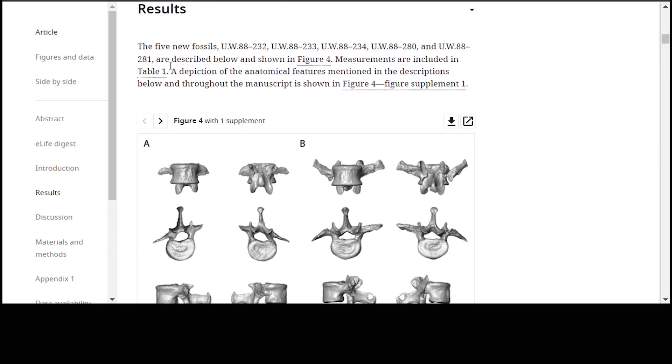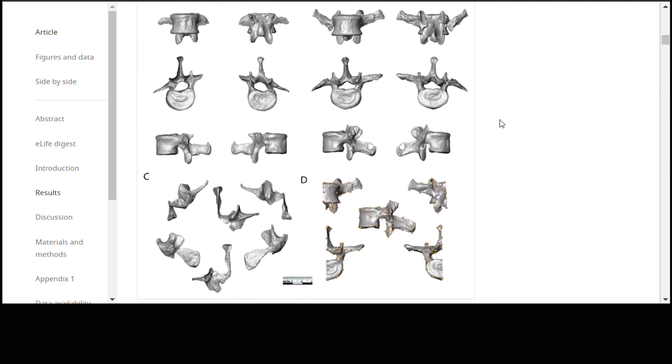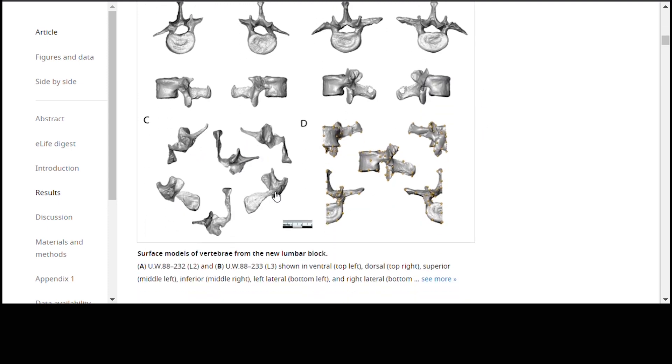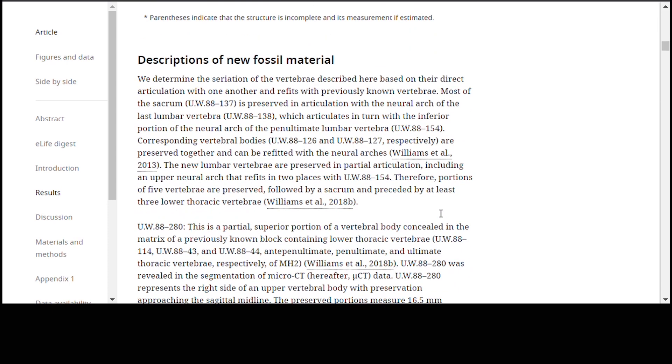In all, there were five new fossils and they are described below and shown in figure four. Measurements are included in table one. So, we have here these new fossils and you can see so this is one vertebrae, this is the next vertebrae, and this is a back of a vertebrae. Now, they give us all the measurements there,